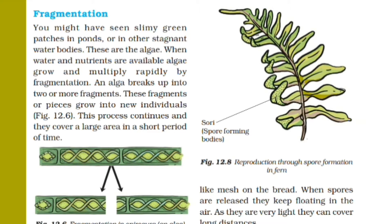When water and nutrients are available, algae grow and multiply rapidly by fragmentation. The process of reproduction in algae is fragmentation. When both water and nutrients are available, algae grow quickly and multiply.